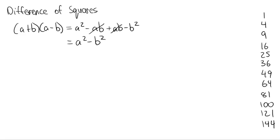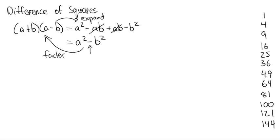So if you ever see two terms that are both perfect squares and they're separated by a minus sign — they have to be separated by a minus sign or it's not going to work — then we can factor it by going this way. Remember, factoring always gets it in brackets — that is the key.